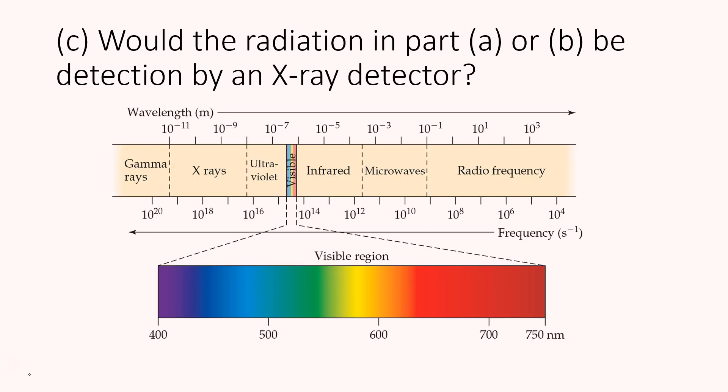So would the radiation in Part A or B be detected by an x-ray detector? So I needed to pull up this diagram in order to answer that question. So if we go back to Part A, the wavelength in Part A was not even 1 nanometer. So in Part A, I think we were somewhere in this region. And yes, I think for the frequency, we got somewhere here. So in Part A, we were somewhere here.